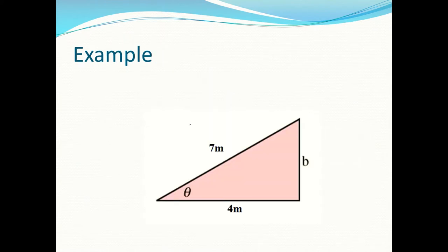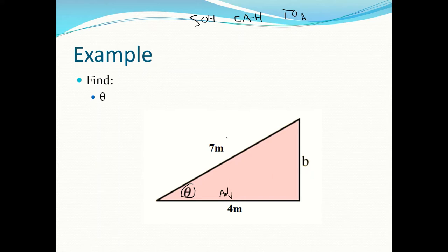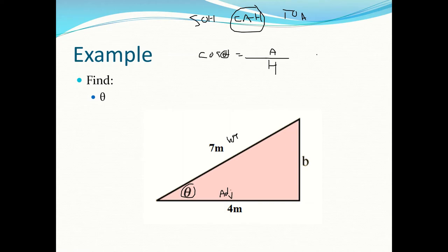Let's do a couple of examples to refresh your memory. To find theta, first write out SOH-CAH-TOA and figure out what sides you have. We're given the adjacent side and the hypotenuse, so we use cosine. The formula is cos θ = adjacent/hypotenuse. To isolate theta, we move cosine down below — but instead of writing 1/cos, we write cos⁻¹.